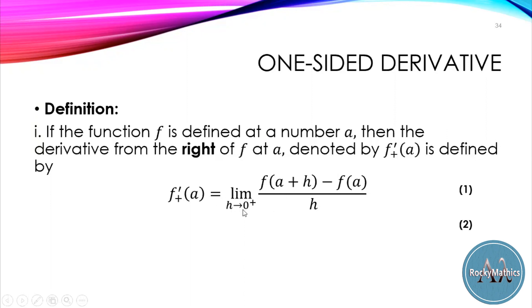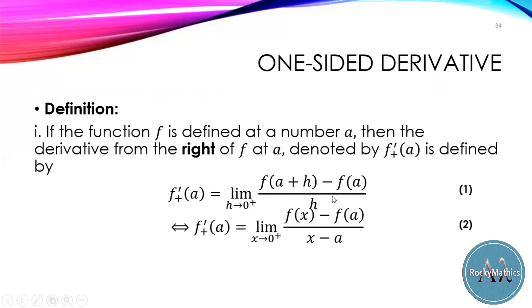What is interesting here is we are only considering the values of h from the right side of 0. The notation for the right-hand derivative is this one, and it is equivalent to the formula: f prime sub-plus of a equals the limit of f of x minus f of a over x minus a as x approaches a from the right. We call this the right-hand derivative.